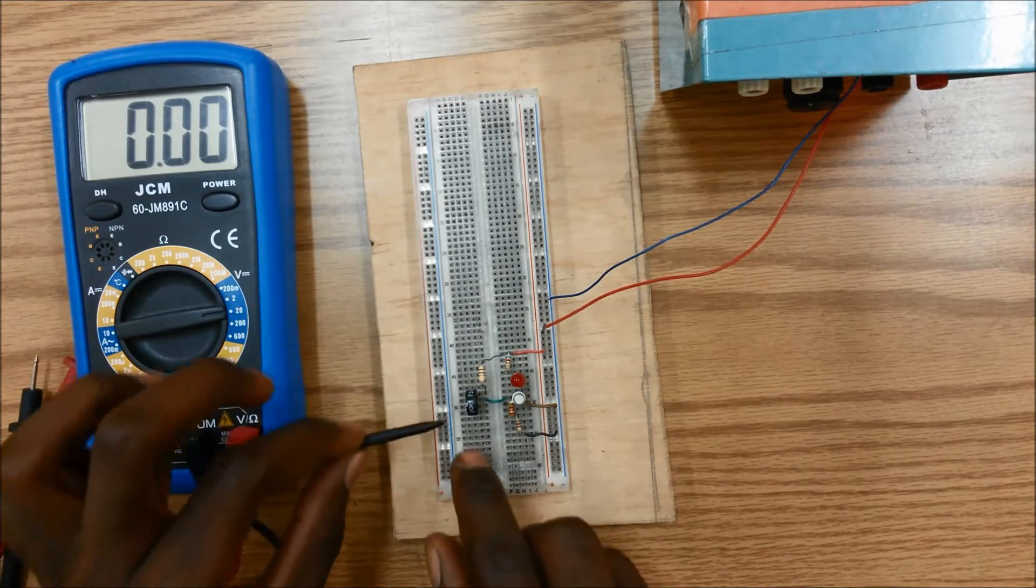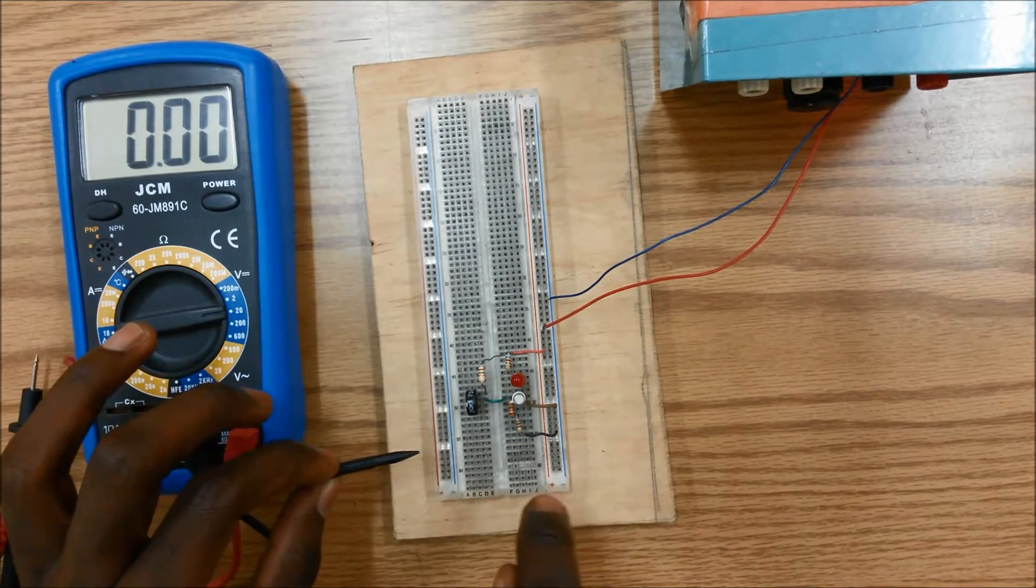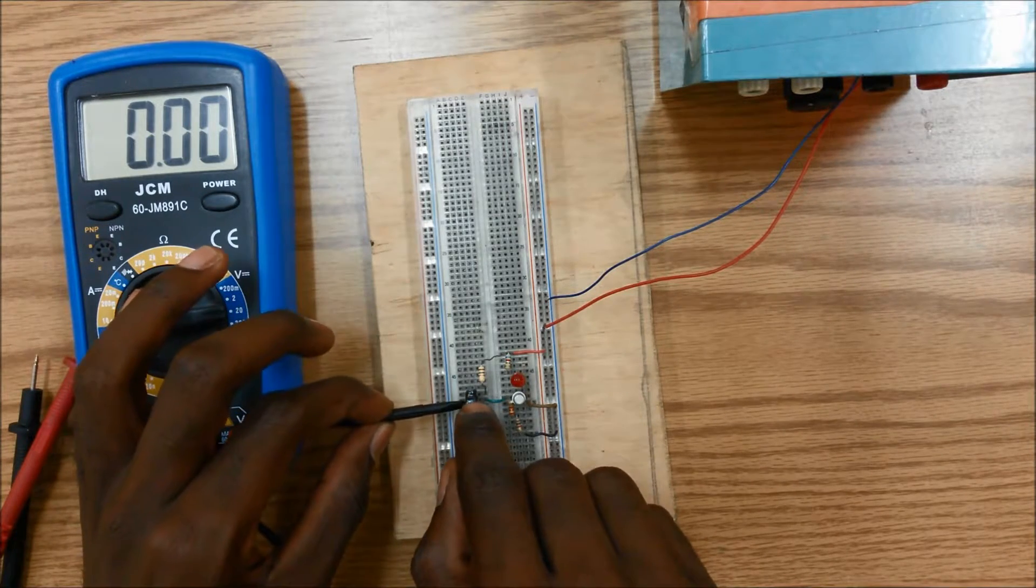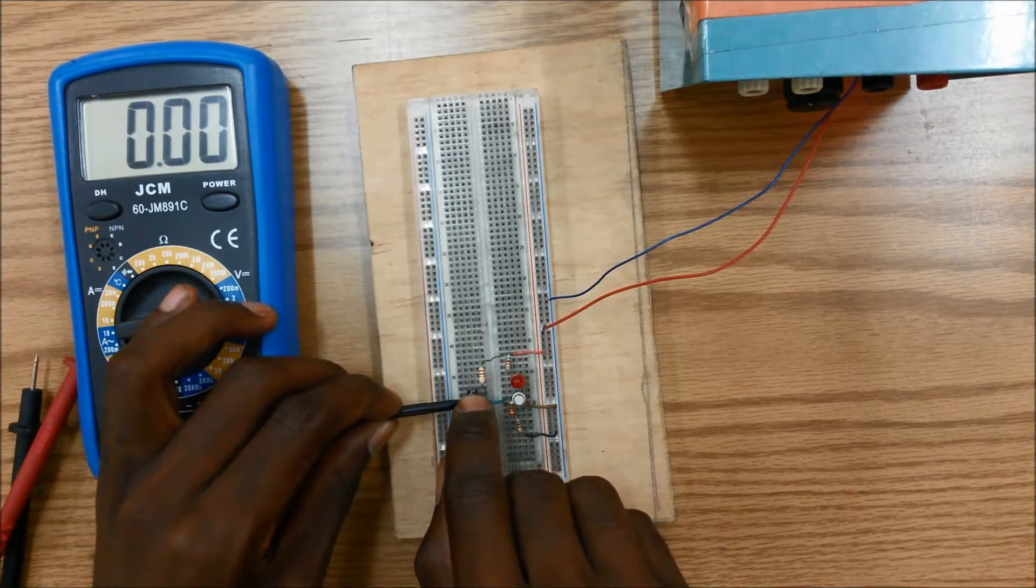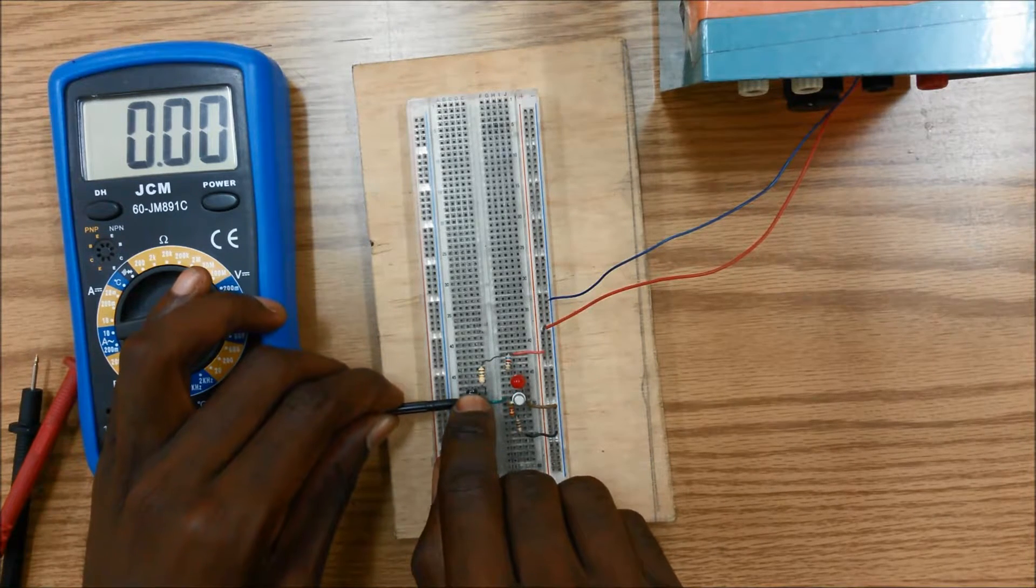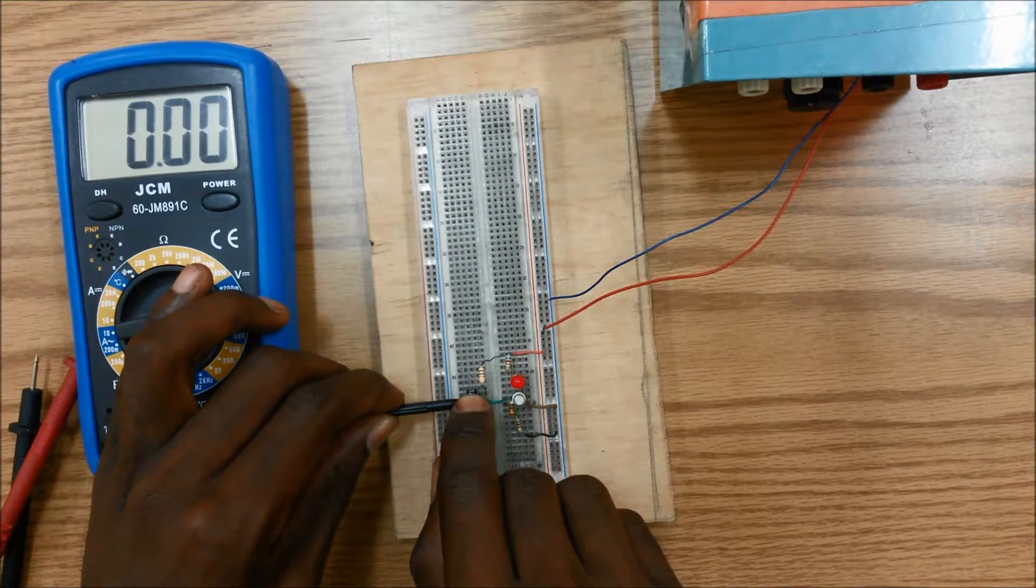So now let me increase the current going into the base by decreasing the value of this resistor. By decreasing the resistance of the resistor and increasing the current, I start to get a current flow at the collector.